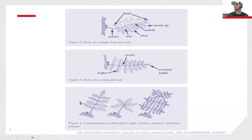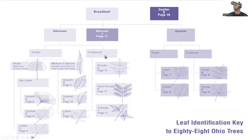Compound leaves can be categorized three ways: pinnate, palmate, or twice pinnate. Once we've identified simple or compound, we need to understand whether it's going to be a broad leaf or a medium-to-narrow leaf. Broad leaves are roughly the same distance wide as they are tall. Medium-to-narrow leaves are usually about one and a half times taller than they are wide — so they're much longer.